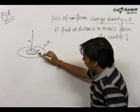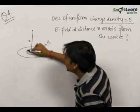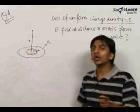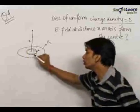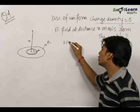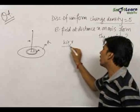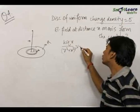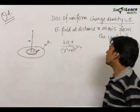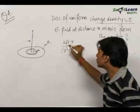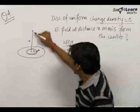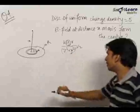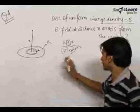We already know the electric field due to a ring on its axis. You should remember the formula: the electric field due to a ring on its axis is k·q·x divided by (r² + x²) raised to the power 3/2. This is the electric field due to a ring of charge q on the axis at a distance x from the centre, perpendicular from the plane of the ring.